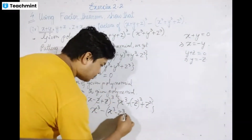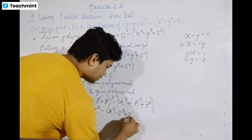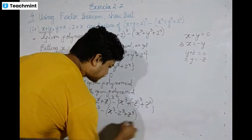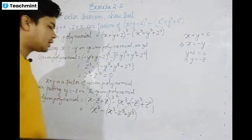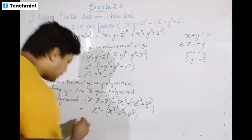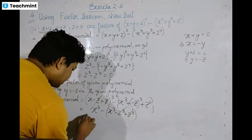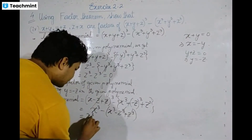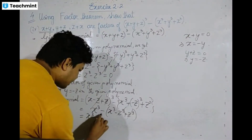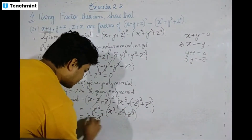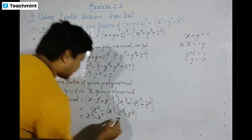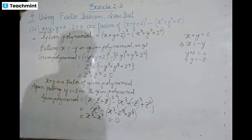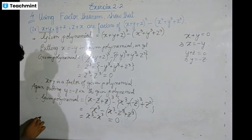Minus z cube plus z cube cancel each other. Similarly, x cube minus x cube also cancels. The result is zero.